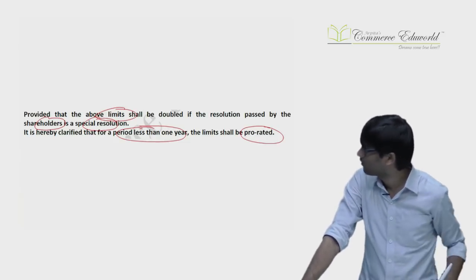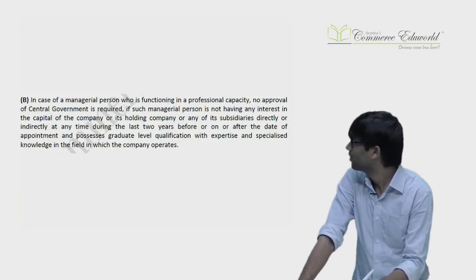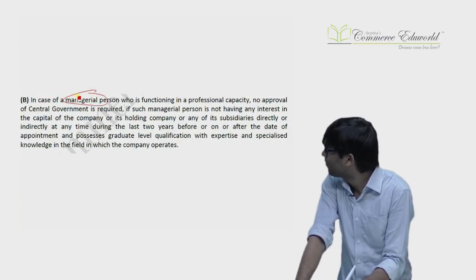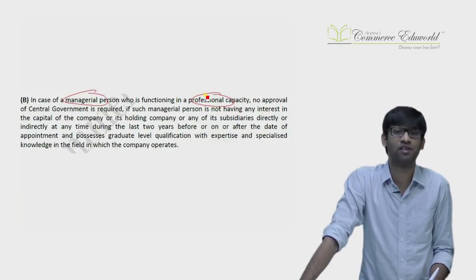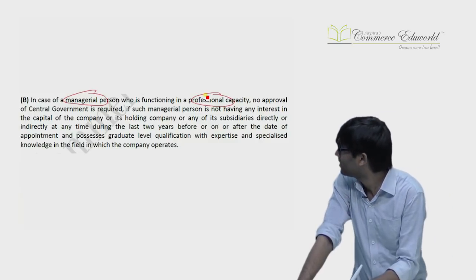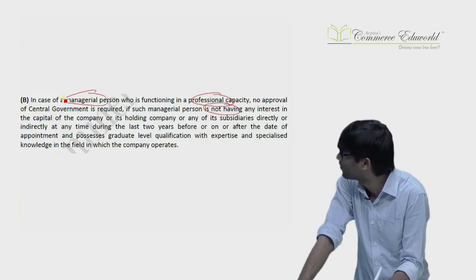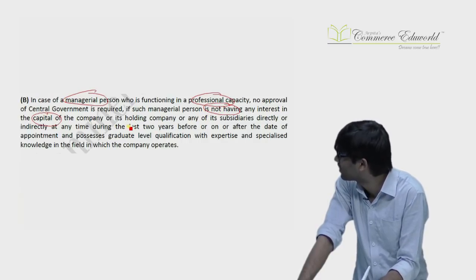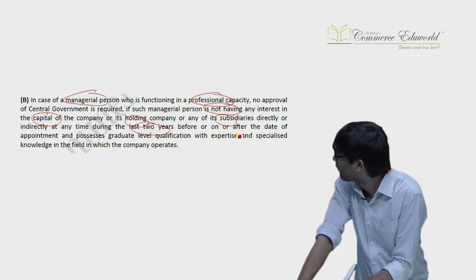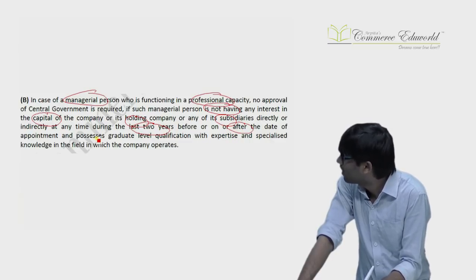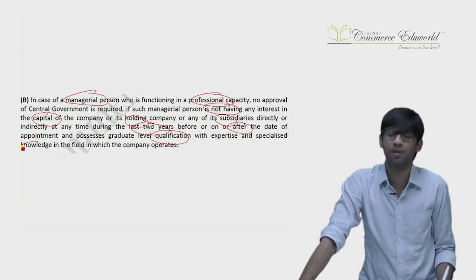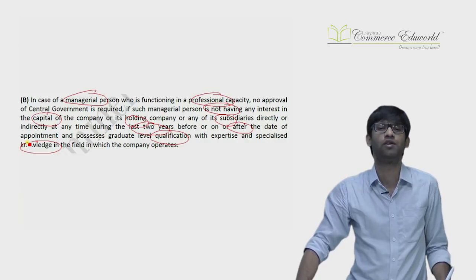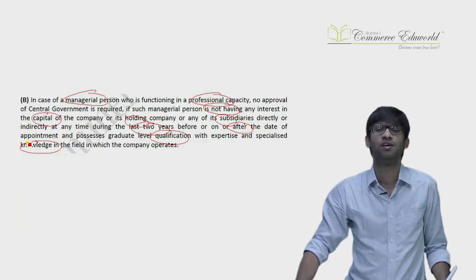Another part of the amendment: if any manager is functioning in a professional capacity, and he does not have any interest in the capital of the company, its holding company, or its subsidiary — directly or indirectly — at any time during the two years before or after the date of appointment, and he has appropriate qualifications and knowledge, then you can pay him manager's remuneration without any limit and without taking permission from the Central Government.